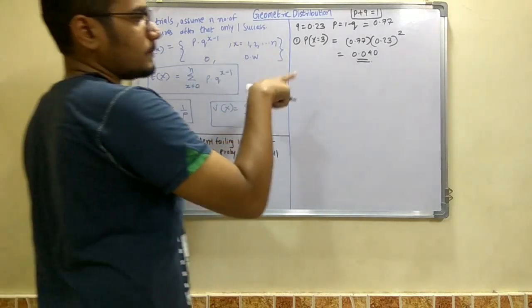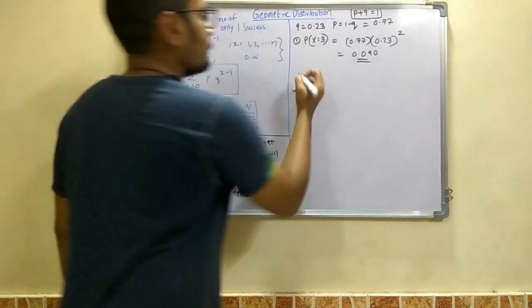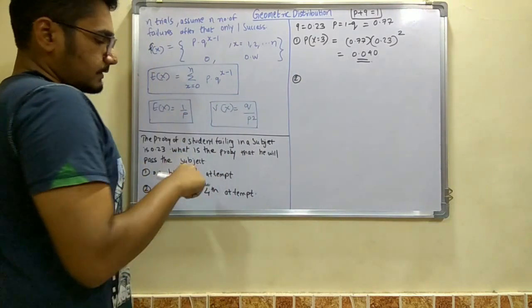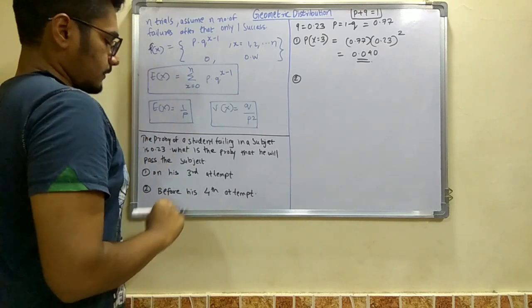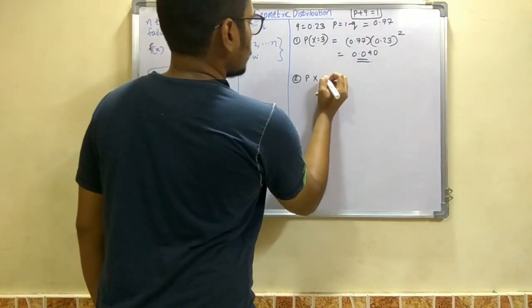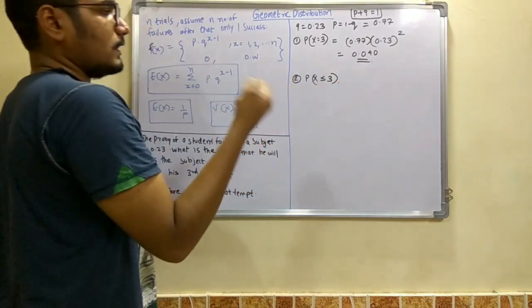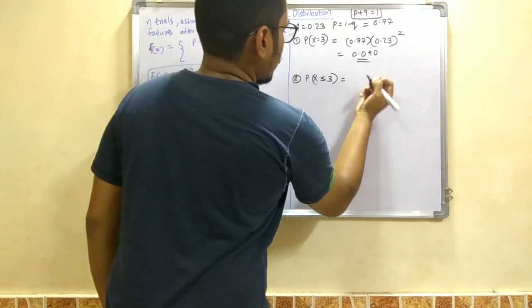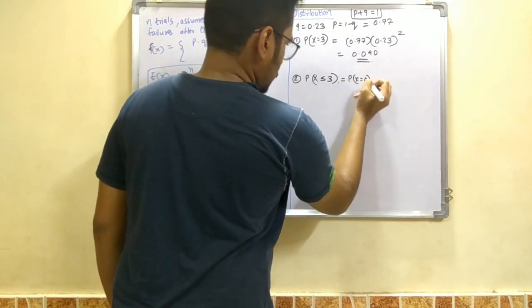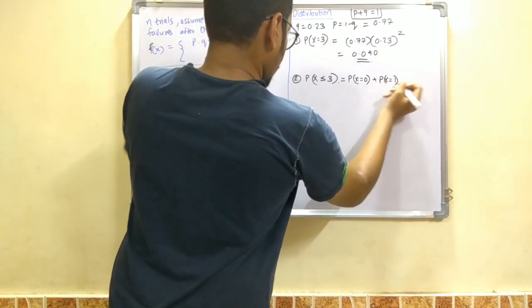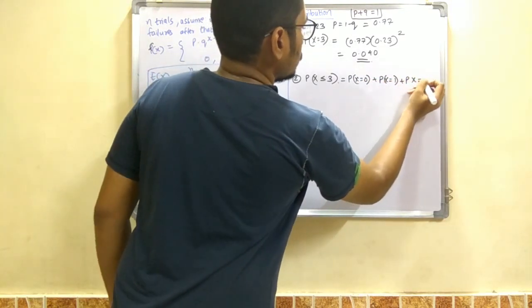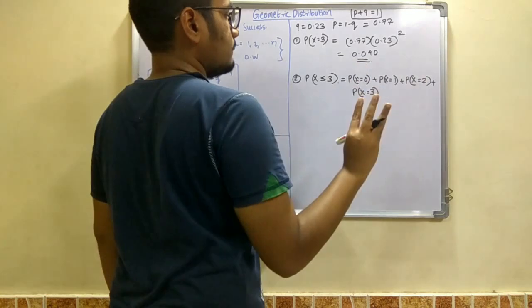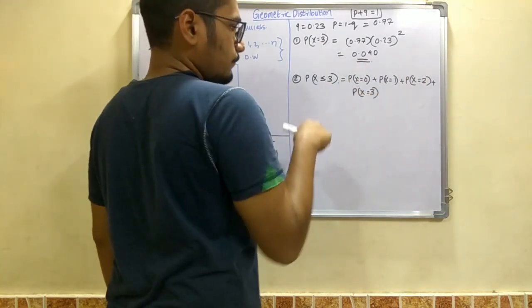Now next is that you have to find the probability before he passes before the fourth attempt. Means before the fourth attempt, means probability of x less than or equal to 3. Means any attempt before 4. And so we expand or split this as probability of x equals 0, probability of x equals 1, probability of x equals 2, and probability of x equals 3. So 0, 1, 2, 3, it becomes 4, and so it is before the fourth attempt.